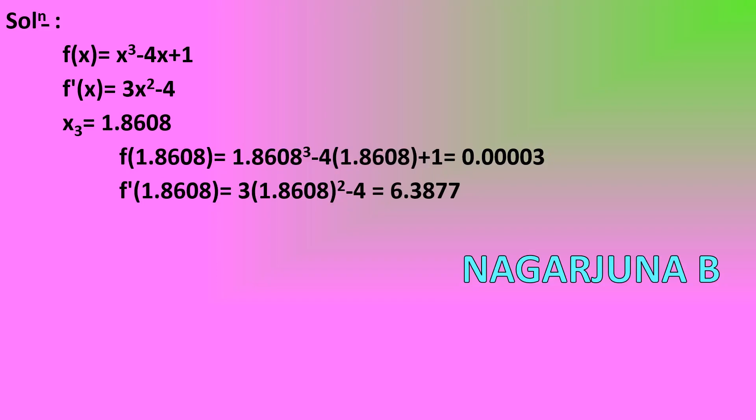One thing to observe: when I wrote f(1.8608), I wrote 5 digits after the decimal point, whereas in previous cases I wrote only 4. In this case, I considered 5 significant digits, though there is no strict rule — you can consider just 4 significant digits and write 0 instead.